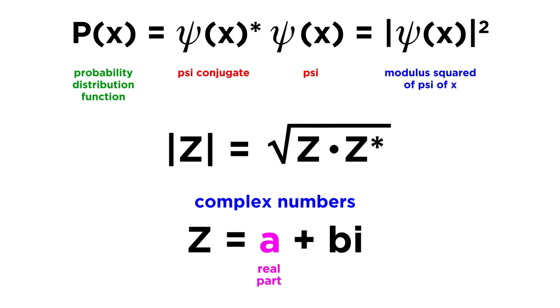So with that, we understand the concept of an operator, some basic rules for applying operators, and how to apply the position and momentum operators to the wave function. Now it's time to learn more about the wave function, so let's move forward and do just that.